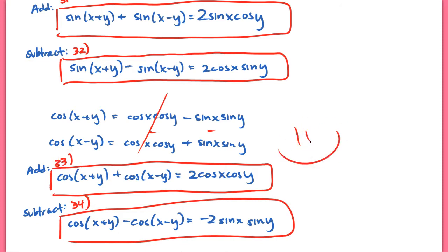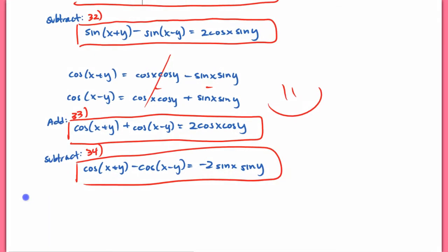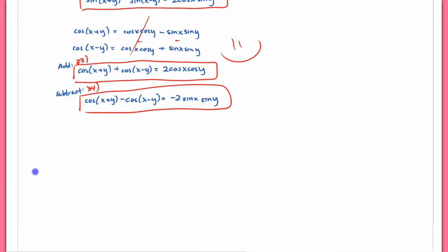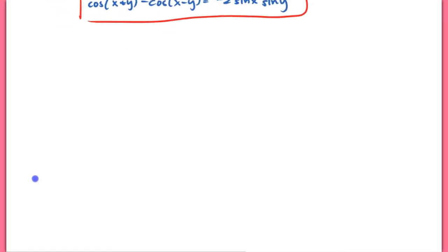We're almost done. That's our last identity, but we need to add an additional note. Remember, we're only using 4 formulas instead of the book's 8, so we have to be able to apply them. We're going to write a condition below — still part of our Prove-It Notes — that's useful in actually applying the formulas we just derived.